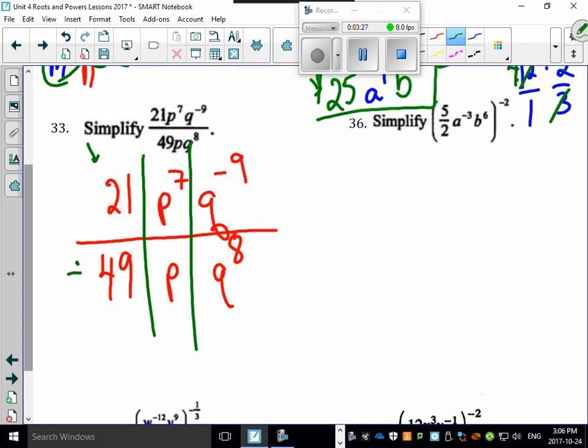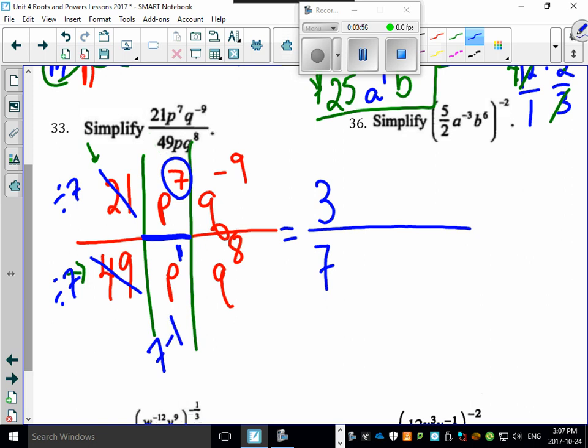There's 21 over 49. You know and I know that that's divisible by 7. So your answer here is going to be 3 on top because 21 divided by 7 is 3. On the bottom, you're going to have 7 because 49 divided by 7 is 7. Now look at what you have here: P to the 7 and this is actually P to the 1. Don't forget, this line means to subtract. So this would be 7 minus 1, which would be P to the 6.